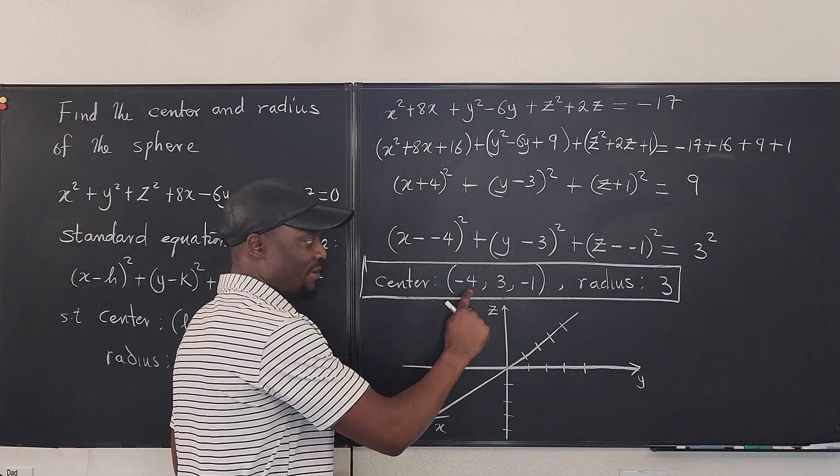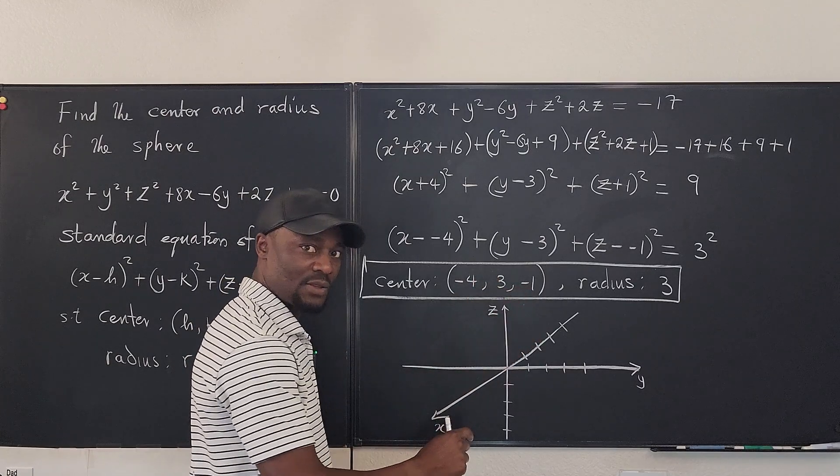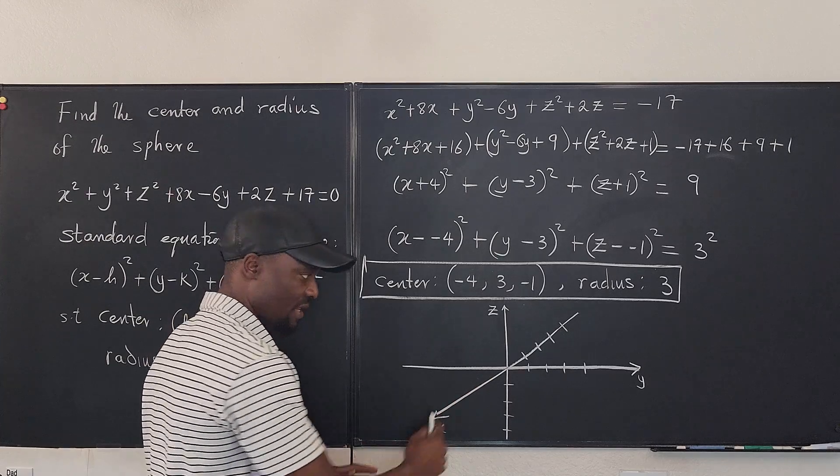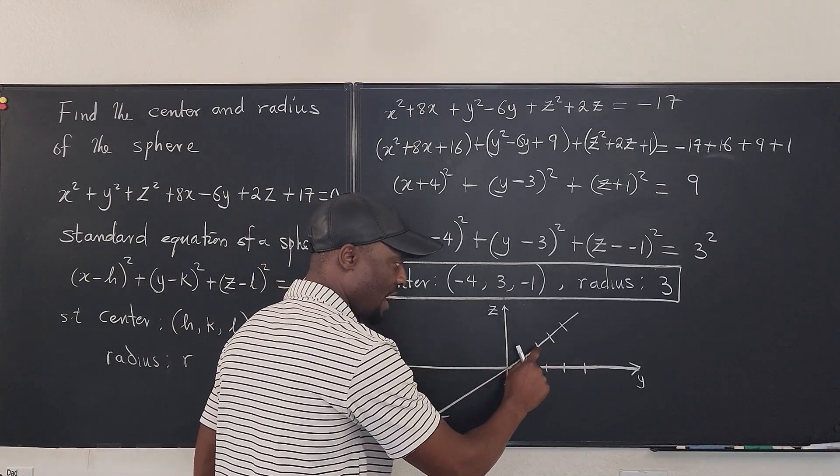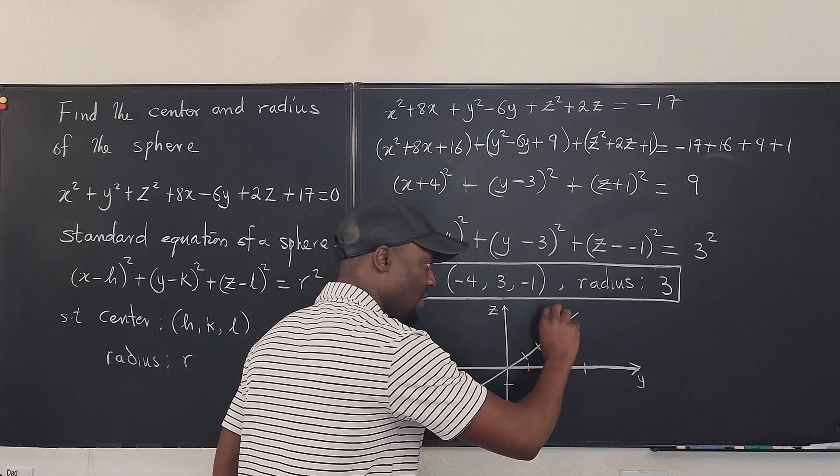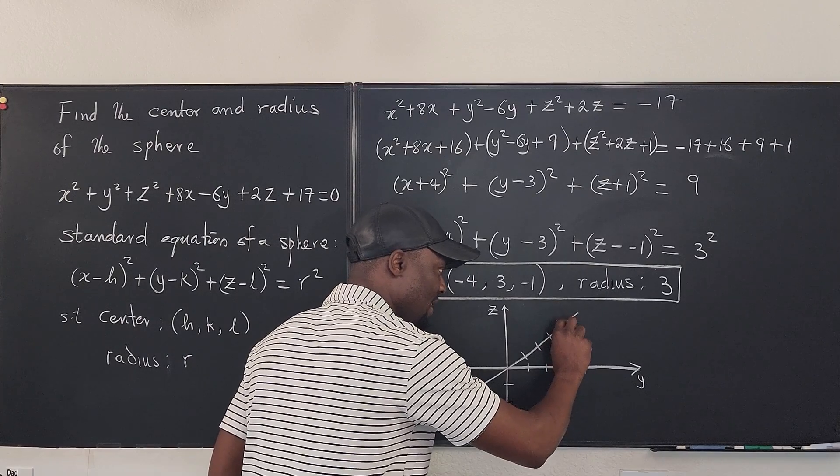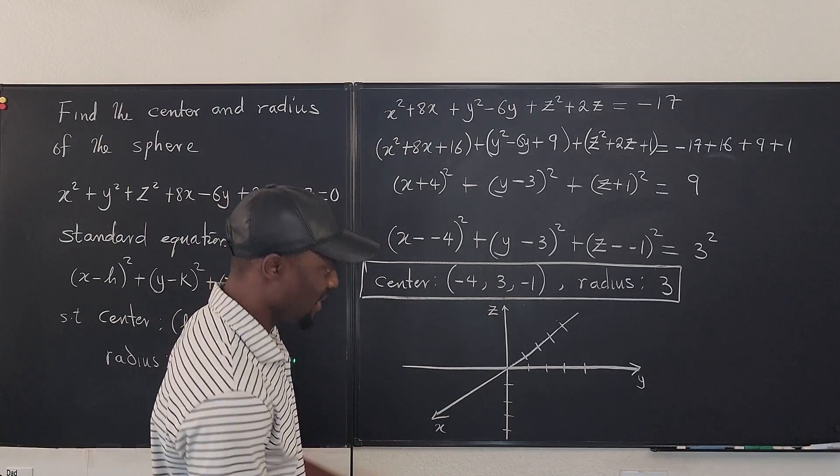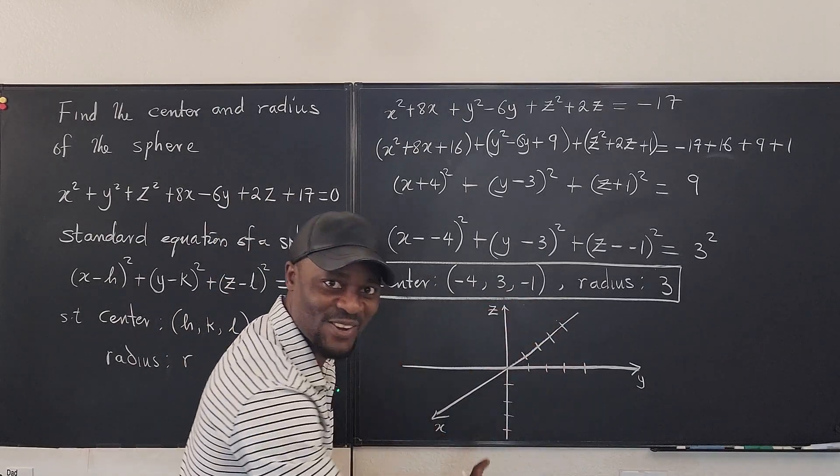So here, my x, remember it's x, y, z. So my x is negative 4. This is the positive part. This is the negative part. So negative 1, negative 2, negative 3, negative 4 is here. So I have this here. This point is on top of the center. The center is somewhere hanging in space.